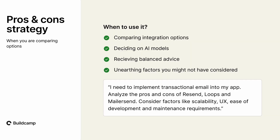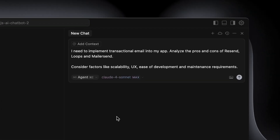When would we use the pros and cons strategy? This is really about comparing and deciding on things like AI models, email integrations, and payment providers. It's the balanced advice that I love about this, and the second interesting thing is unearthing factors we have not considered. Jumping into Cursor, this is the prompt.